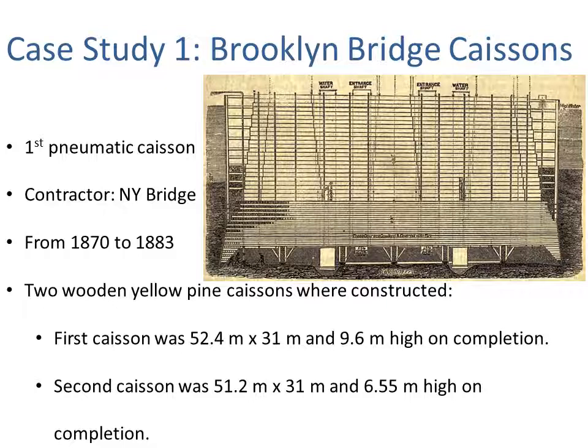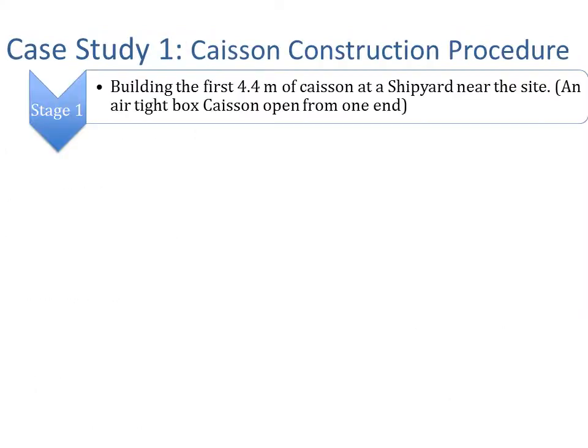The first case study is the Brooklyn Bridge caisson — a historic example and the first pneumatic caisson on earth, located in New York, constructed from 1870 to 1883. Two wooden yellow pine caissons were built: the first measured 52.4 meters by 31 meters by 9.6 meters high on completion, and the second was 51.2 by 31 meters by 6.55 meters high on completion.